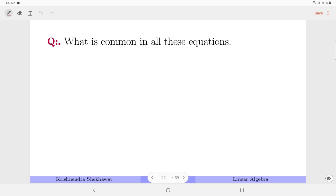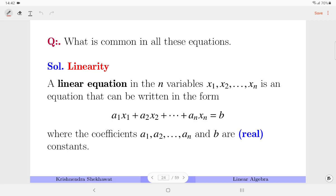What is common in all these equations? Of course all these equations have two variables, but the more important point is linearity. All of these equations are linear, and therefore we can define the linear equation in n variables as follows: a1x1 plus a2x2 plus so on equals b, where all ai's and b are real constants.